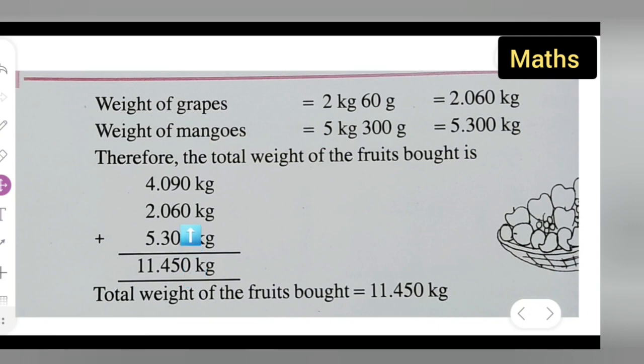0 plus 0 plus 0 will give you 0. 9 plus 6 will give you 15, so carry 1. Then you'll have to add 3 plus 1 will give you 4. Put a decimal point as it is. 5 plus 2 gives 7, plus 4 is 11.